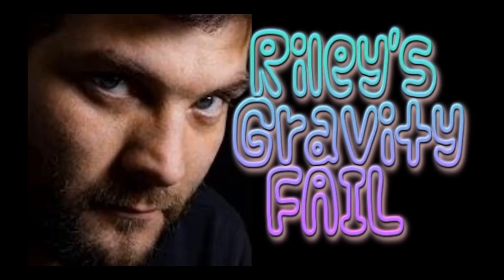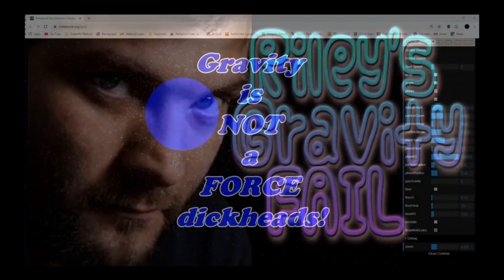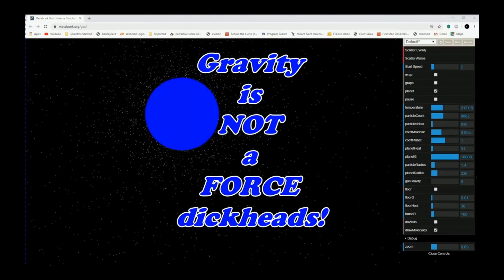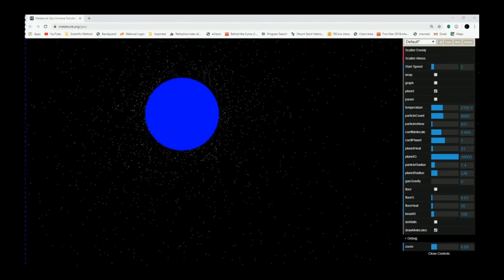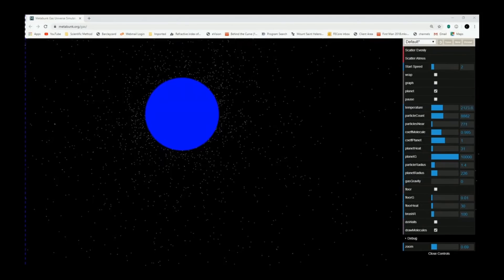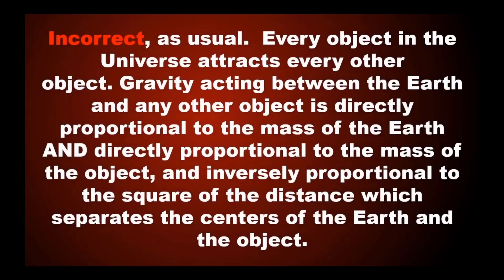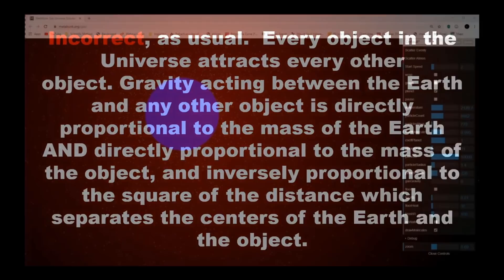We all know that gravity is not a force. Even if it was, it doesn't hold the atmosphere onto the earth because it isn't capable of doing it. It's not nearly strong enough. Remember, gravity is proportionate to the mass, so the smaller the mass, the smaller the force. Gas particles are minuscule. They travel at high velocity. Gravity acting between the earth and any other object is directly proportional to the mass of the earth and the mass of the object, and inversely proportional to the square of the distance that separates the objects. Get it right, will you?